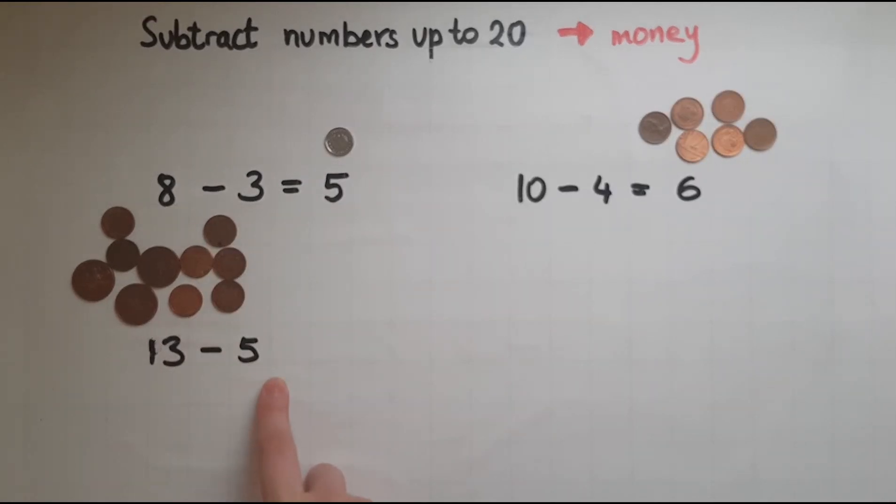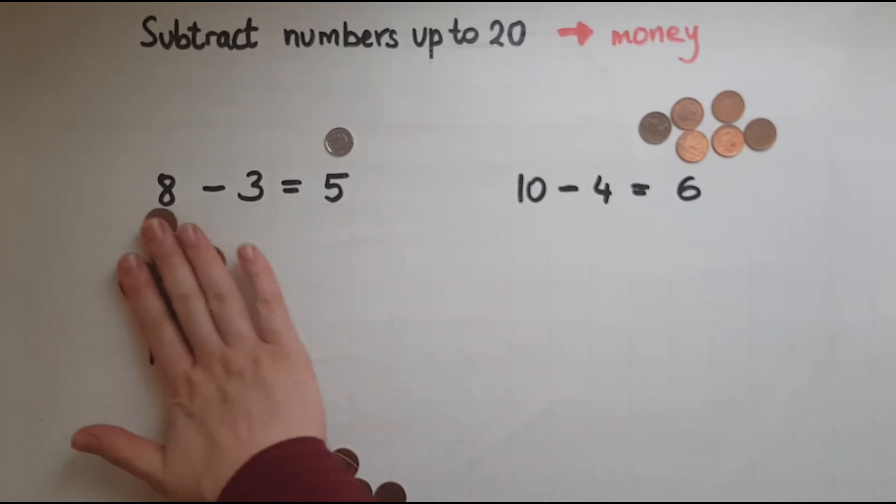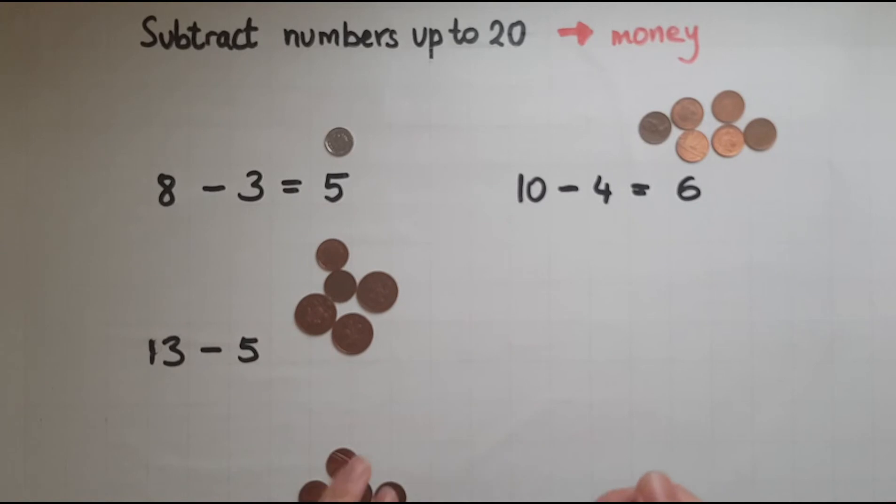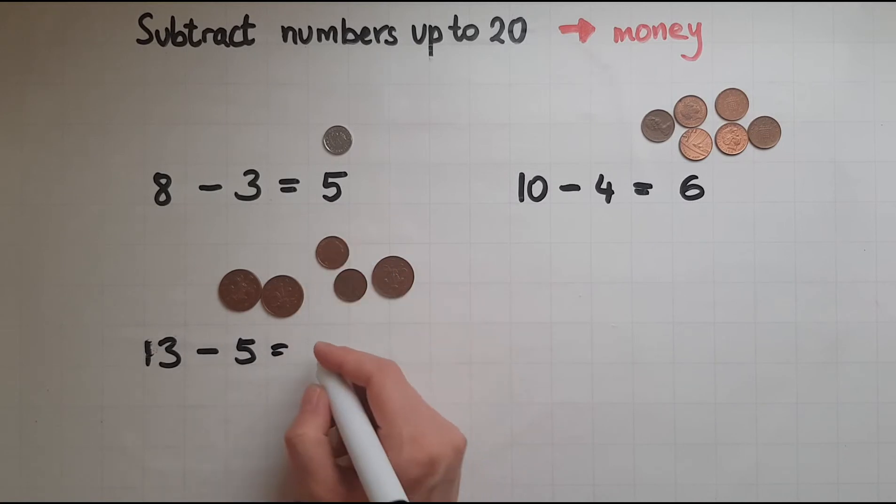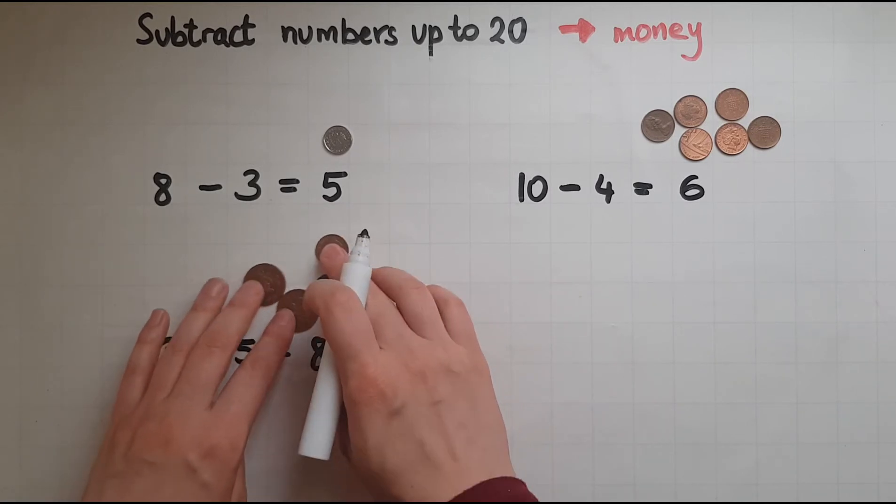I'm going to take away 5. It's easy now: 1, 2, 3, 4, 5. So what is left? We've got 2, 4, 6, 7, 8. So 8 pennies is left.